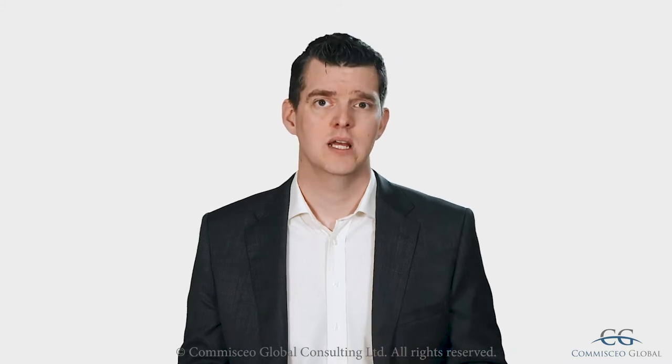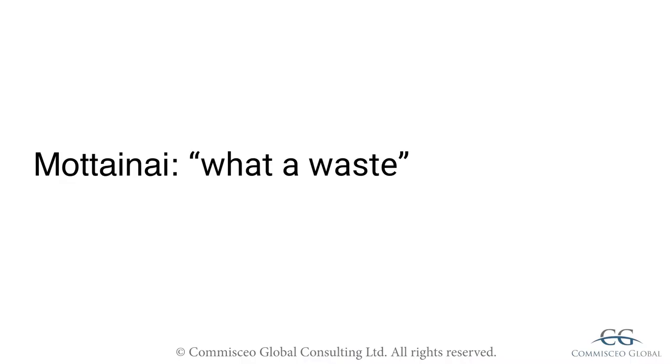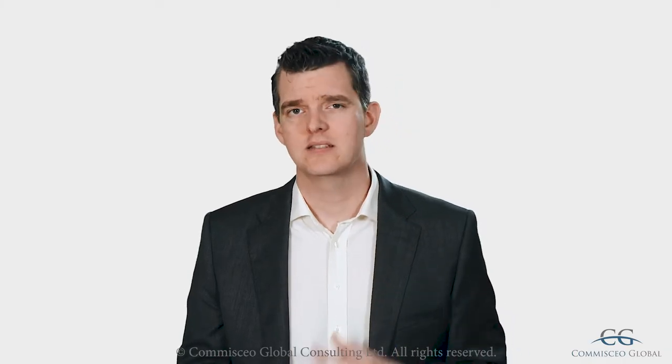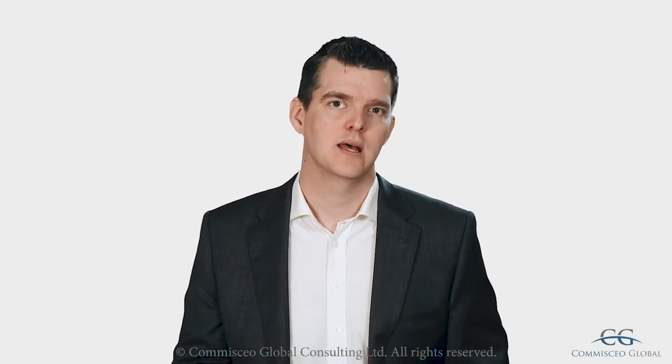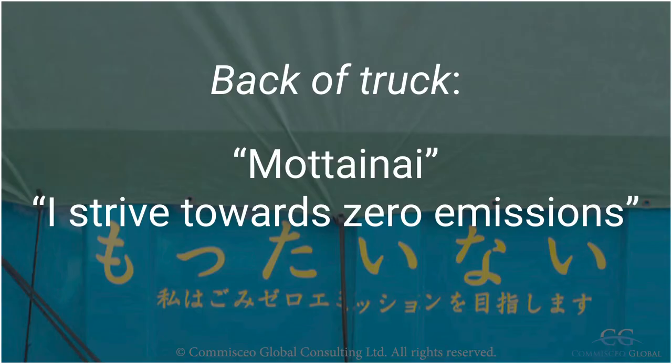Our next value is mottainai, which means something along the lines of 'what a waste.' Closely tied to the Japanese experience of living on an island with limited resources, the Japanese feel regret towards waste of any kind. It expresses guilt when wasting something considered worthy — this might be wasted food, wasted time, or a piano that hasn't been played in a long time. All are mottainai.